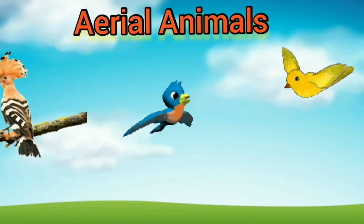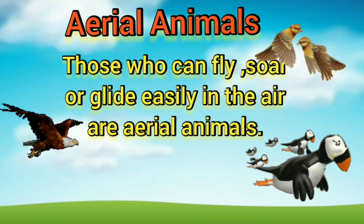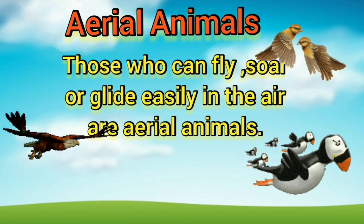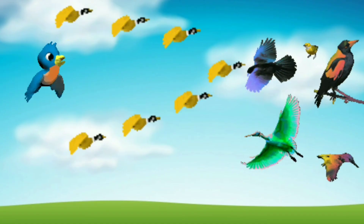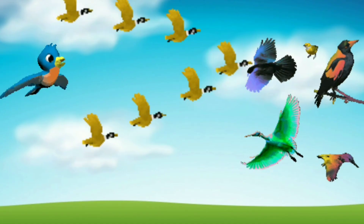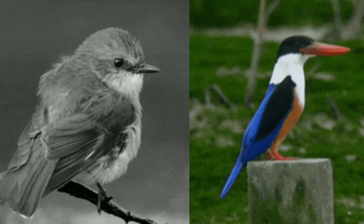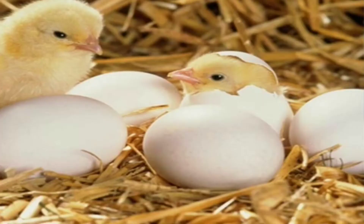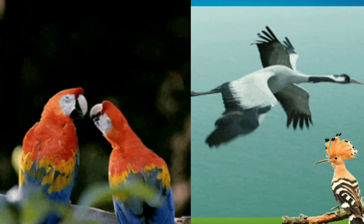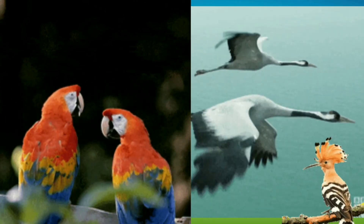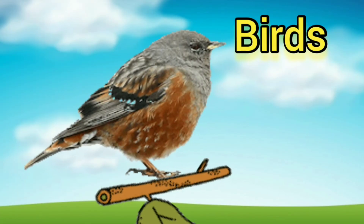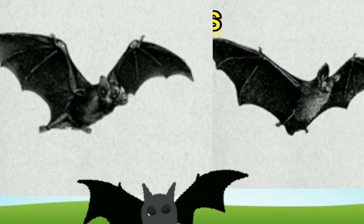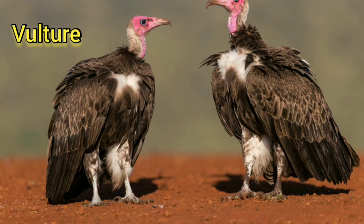Aerial animals are those that can fly on their own. Those who can fly, soar or glide easily in the air are aerial animals. They spend most of their time in the air. They have two legs, hatch from eggs, have light bodies with feathers, hollow and light bones, and mostly fly with wings. Aerial animals include birds, insects, bats, vultures, and flamingos.